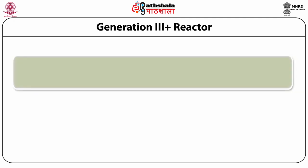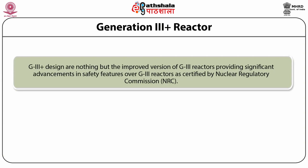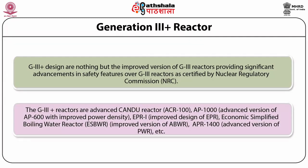Next is Generation 3+ (G3+) reactors. G3+ designs are improved versions of G3 reactors, providing significant advancements in safety features over G3 reactors as certified by the Nuclear Regulatory Commission (NRC). The G3+ reactors include: advanced CANDU reactors (ACR-100), AP1000 (an advanced version of AP600 with improved power density), EPR (first improved design), the Economic Simplified Boiling Water Reactor (ESBWR, an improved version of ABWR), and APR-1400 (advanced version of PWR).